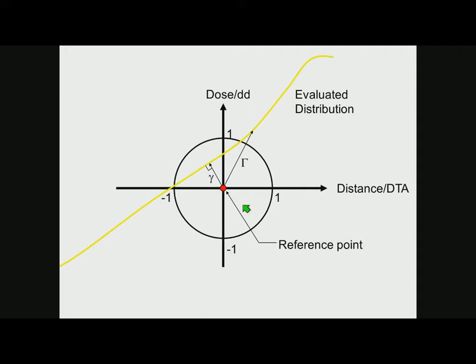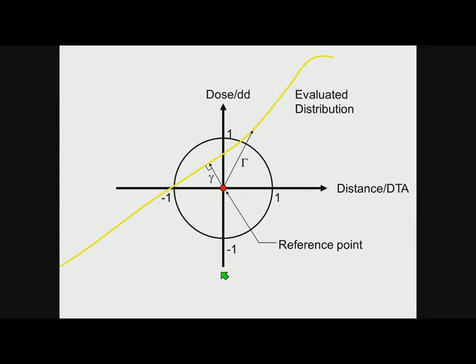If I normalize these axes by the criteria themselves — the distance-to-agreement criterion and the dose difference criterion — all of a sudden I'm unitless, and I can make a measurement in an arbitrary direction. The closest distance is called capital gamma for any one measurement, and the smallest is called little gamma. If it's less than one, that means the evaluated distribution came within the unit circle of the reference point and it passes.